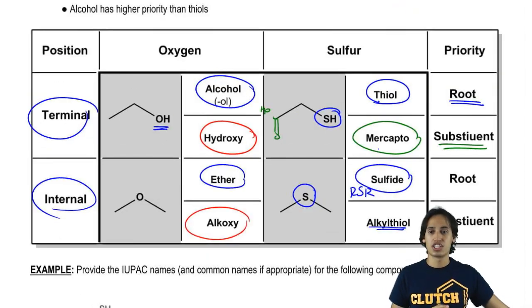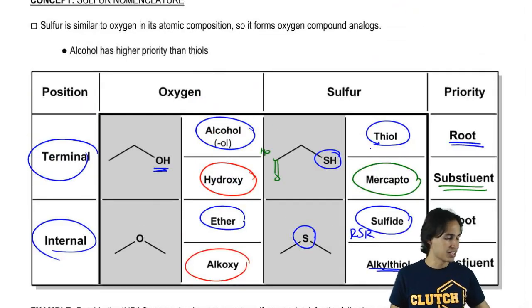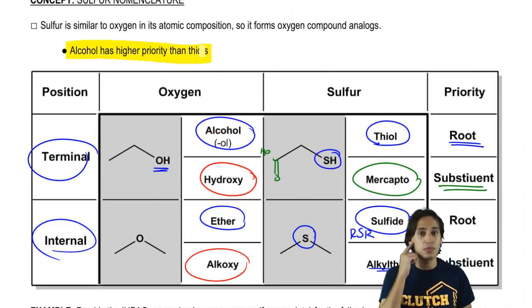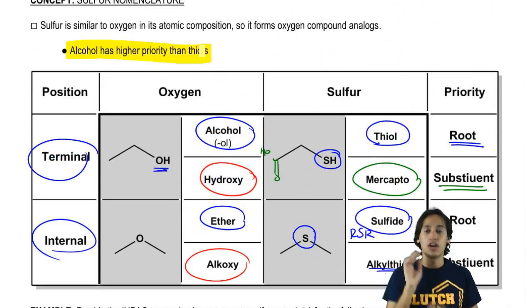One more thing. Just keep in mind that alcohol actually has higher priority than thiols. So that should give you an idea of which one to name as the substituent and which one to name as the root.